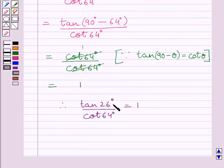So, we get tan 26 degrees upon cot 64 degrees is equal to 1. So, our required answer is 1.